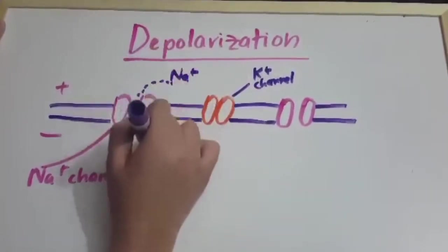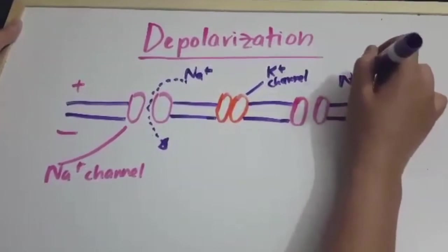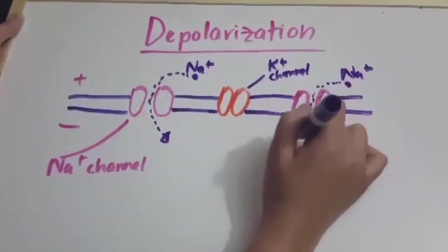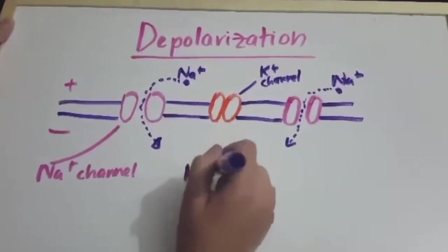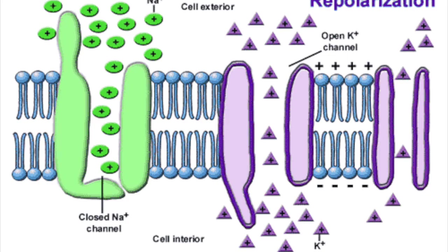At a molecular level, action potential involves the opening of many more sodium channels. This allows a larger number of sodium ions to enter the cell, resulting in a rapid change of polarity, where the inside of the cell is now positive and the outside of the cell is more negative.